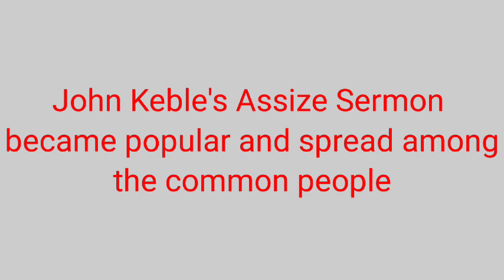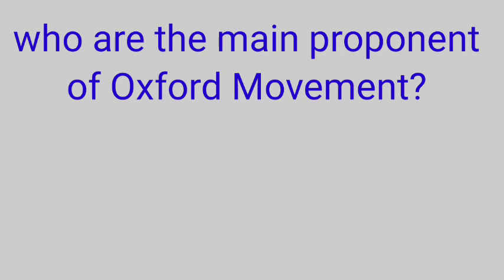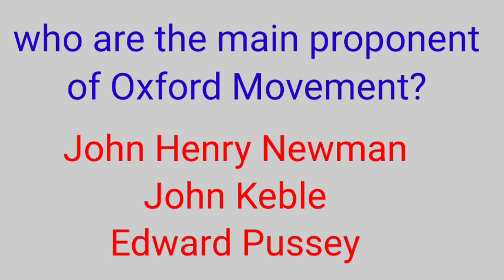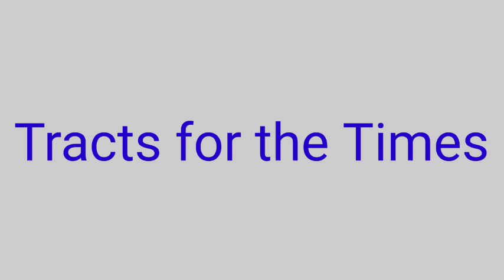The main proponents of the Oxford Movement were John Keble, Henry Newman, and Pusey. They published their doctrines and opinions in a pamphlet named Tracts for the Times. Those persons who followed the doctrines of the Tracts are called Tractarians.